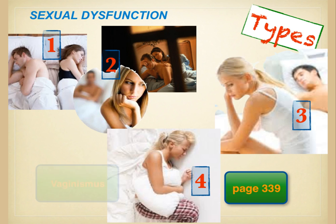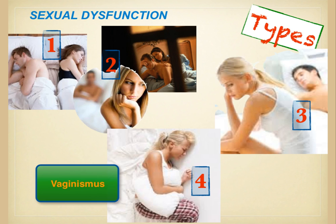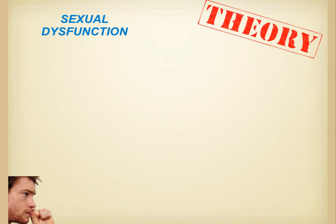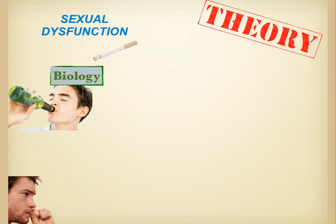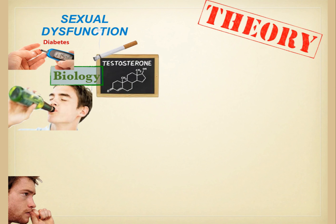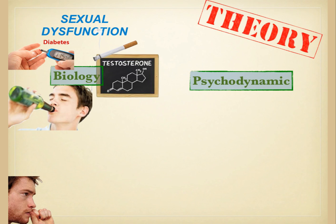There are four comorbid conditions which are not caused by a medical condition — you can see this on page 339. An example would be vaginismus. When looking at theories for sexual dysfunction, it can stem from biological factors such as disease or the effects of alcohol, drugs, and tobacco. Diabetes is the most common organic cause of erectile dysfunction, and testosterone plays a huge role in sexual interest and functioning in both men and women. Psychological factors such as performance anxiety or unresolved conflicts are often explained through Freud's psychosexual stages, though these are very controversial and questionable, with not a lot of solid substantiation.